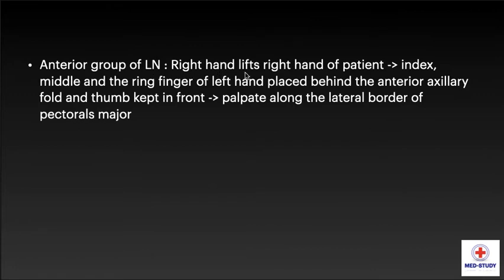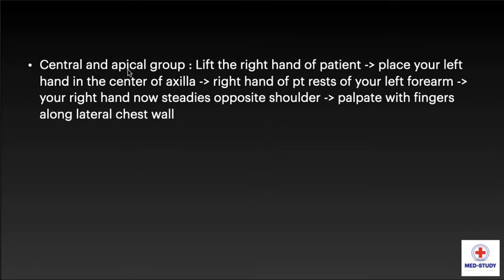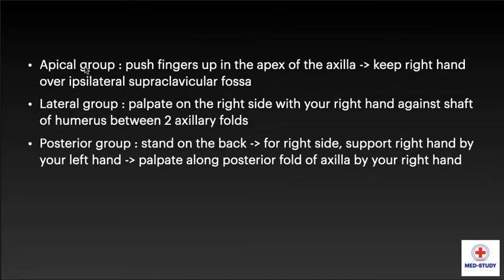Diagram E shows palpation of posterior axillary nodes from behind. For the anterior group of lymph nodes, the right hand of the examiner lifts the right hand of the patient; index, middle, and ring fingers of the left hand are placed behind the anterior axillary fold with thumb kept in front — palpate along the lateral border of pectoralis major. For central and apical group, lift the right hand of the patient, place your left hand in the center of axilla, right hand of the patient rests on your left forearm, right hand steadies the opposite shoulder — palpate with fingers along the lateral chest wall. For the apical group, push fingers up into the apex and keep the right hand over the ipsilateral supraclavicular fossa.